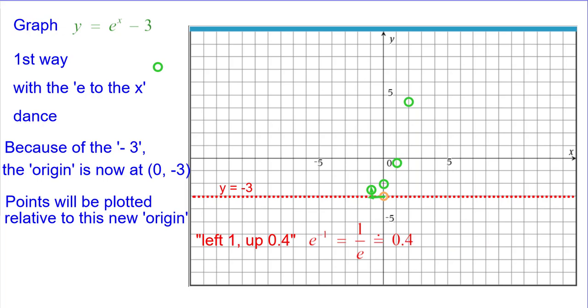Left 1 up 0.4, the reciprocal of e is about 0.4. And left 2 up 0.14, e to the negative 2 is approximately 0.14.